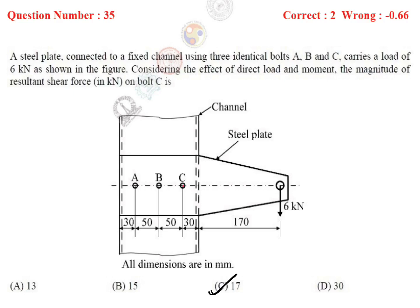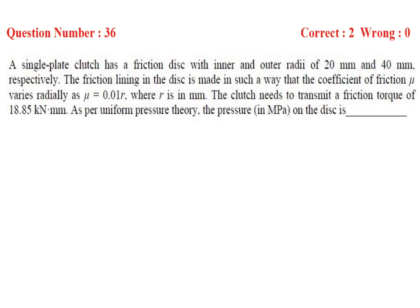Next question: a single plate clutch has a friction disc with inner and outer radii of 20 mm and 40 mm respectively. The friction lining is made such that the coefficient of friction mu varies radially as mu equals 0.01R, where R is in mm. The clutch needs to transmit a friction torque of 18.85 kN·mm. As per uniform pressure theory, the pressure in MPa on the disc is how much?